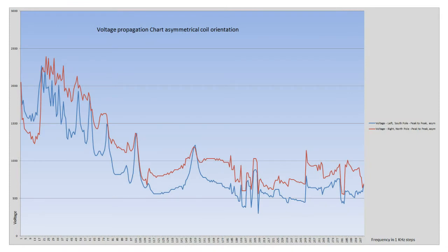The first chart is from the asymmetrical coil, called the voltage propagation. It is quite interesting that voltage is very often aligned between north and south pole, or right and left-hand side. You can see it in the so-called dips in equal harmonics — or in odd and even harmonics. Bear in mind that the voltage input of 20 volts and the 15 volts on the driver side has not changed. That is very important to note.